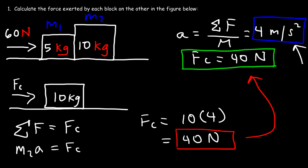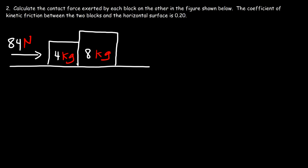That's how you calculate the contact force with no kinetic friction. Now let's try a problem where there is kinetic friction. Problem 2: calculate the contact force exerted by each block on the other. The coefficient of kinetic friction between the blocks and the horizontal surface is 0.20. Just like before, we start by calculating the acceleration of the system — total force driving the system divided by total mass. The force driving it is the applied force of 84 N.